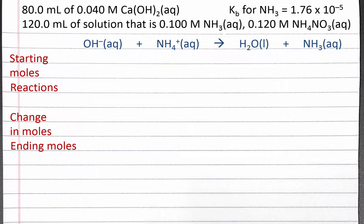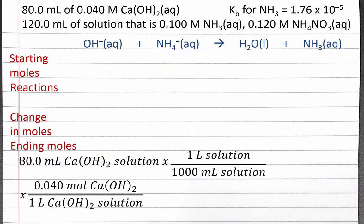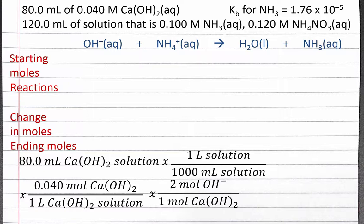We have our equation at the top, and in the first row we want to calculate our starting moles of each substance in the reaction. The moles of hydroxide in this equation come from the calcium hydroxide solution, so we'll start our dimensional analysis with 80 milliliters of calcium hydroxide solution and calculate moles of hydroxide. We can convert from milliliters to liters of solution, then use the molarity — 0.040 moles of calcium hydroxide per liter — and then account for two moles of hydroxide per mole of calcium hydroxide. Completing the calculation, we get 0.0064 moles of hydroxide, and we add this value to our table.